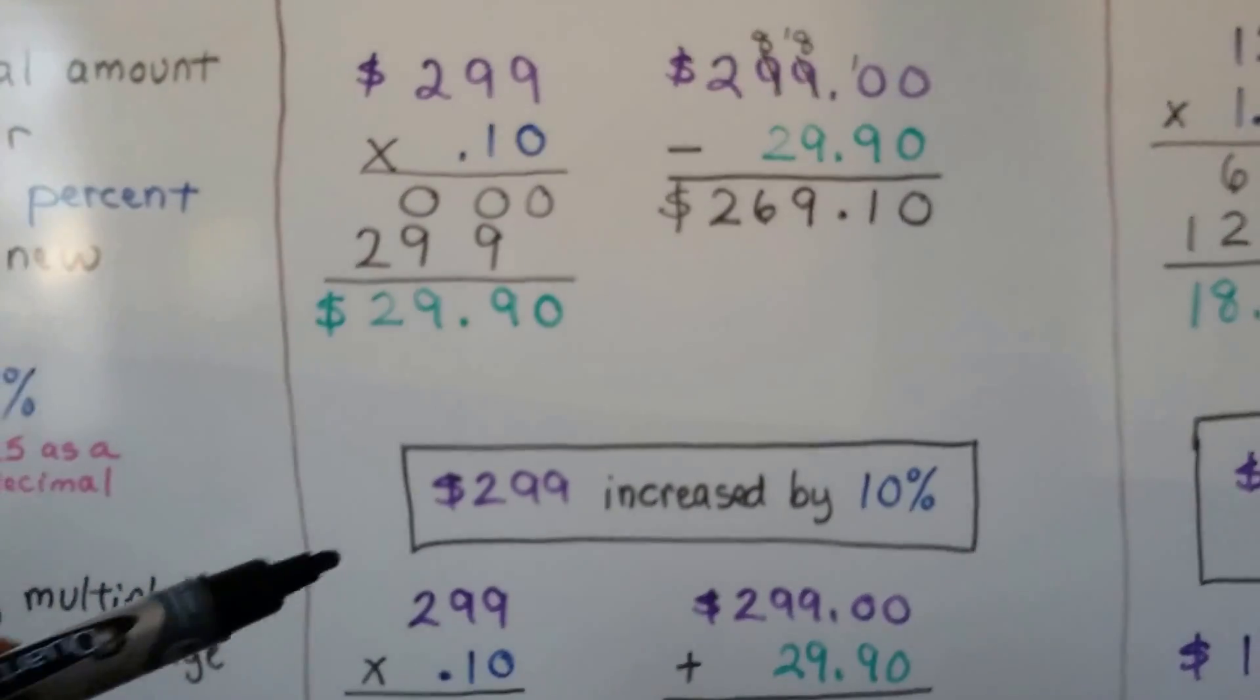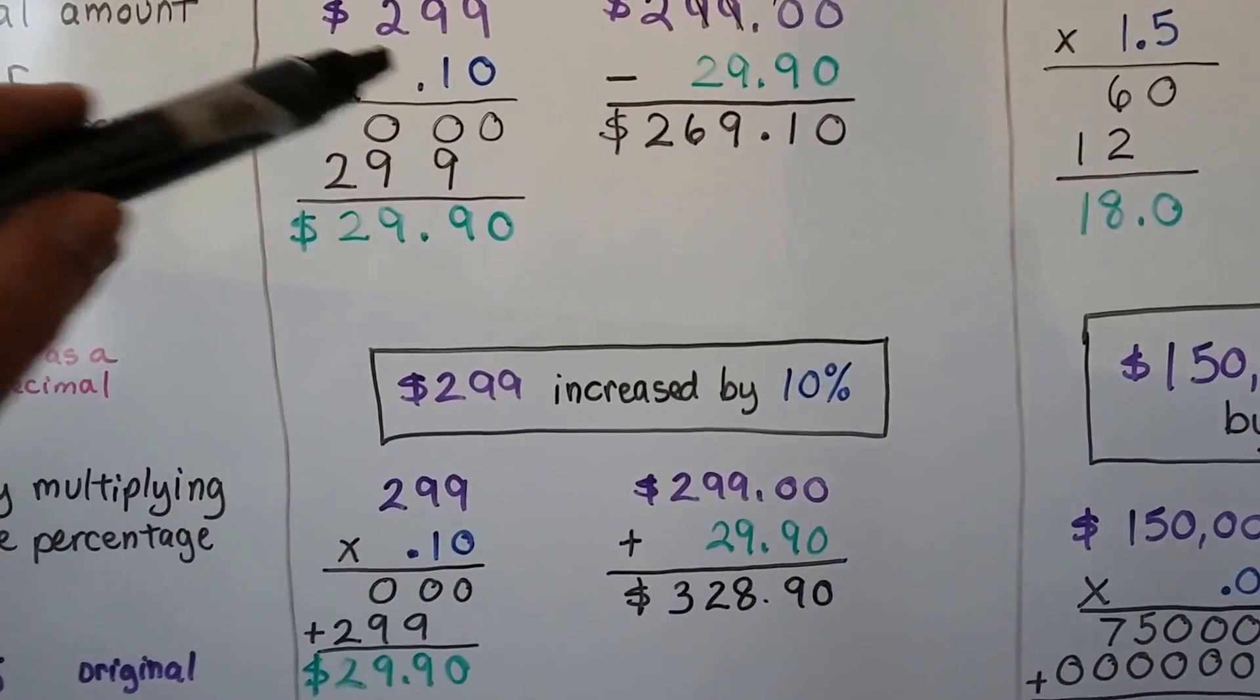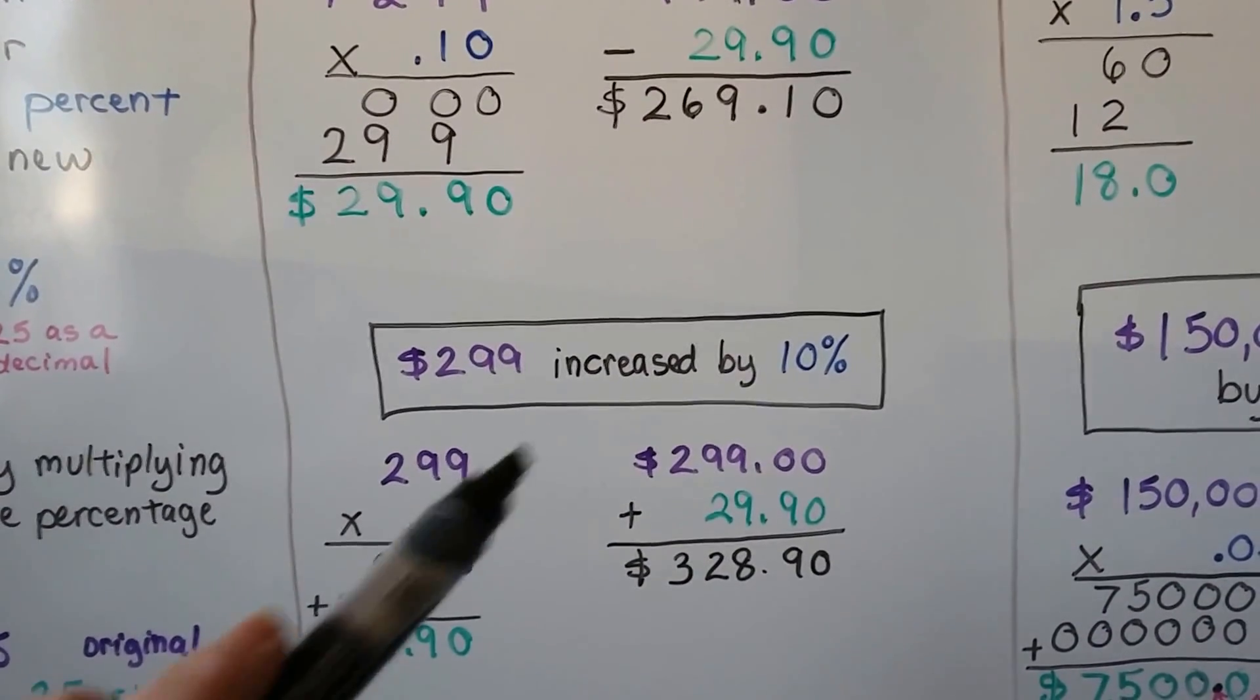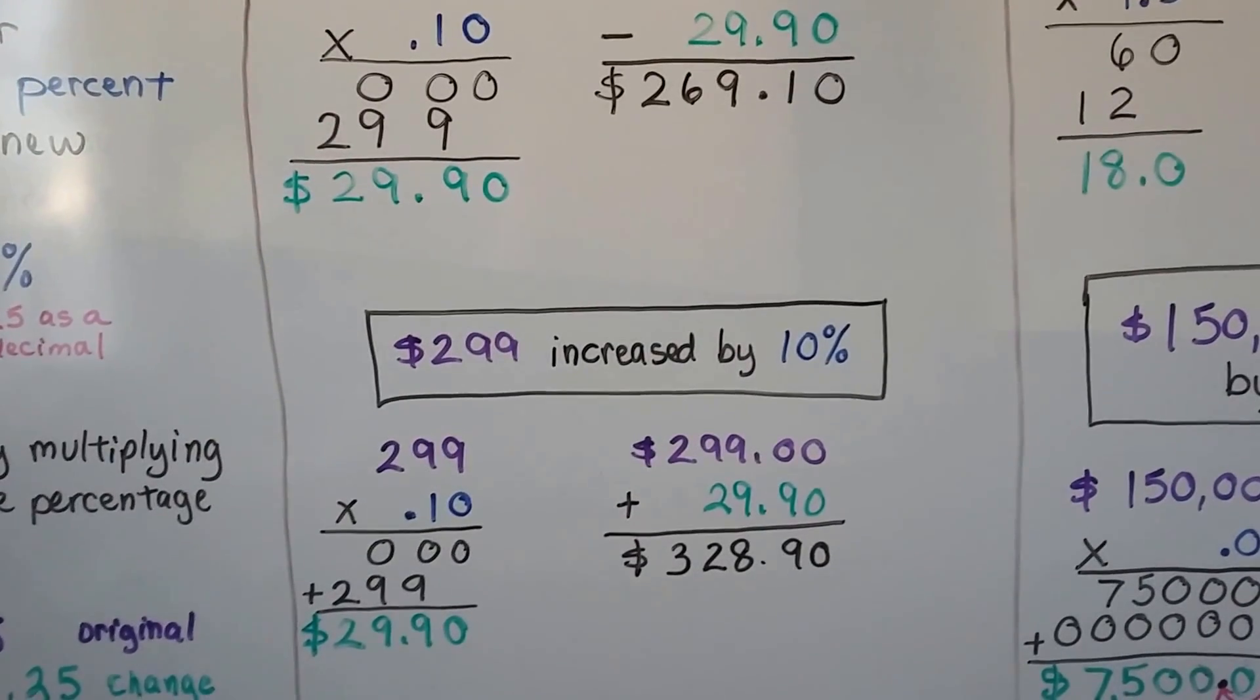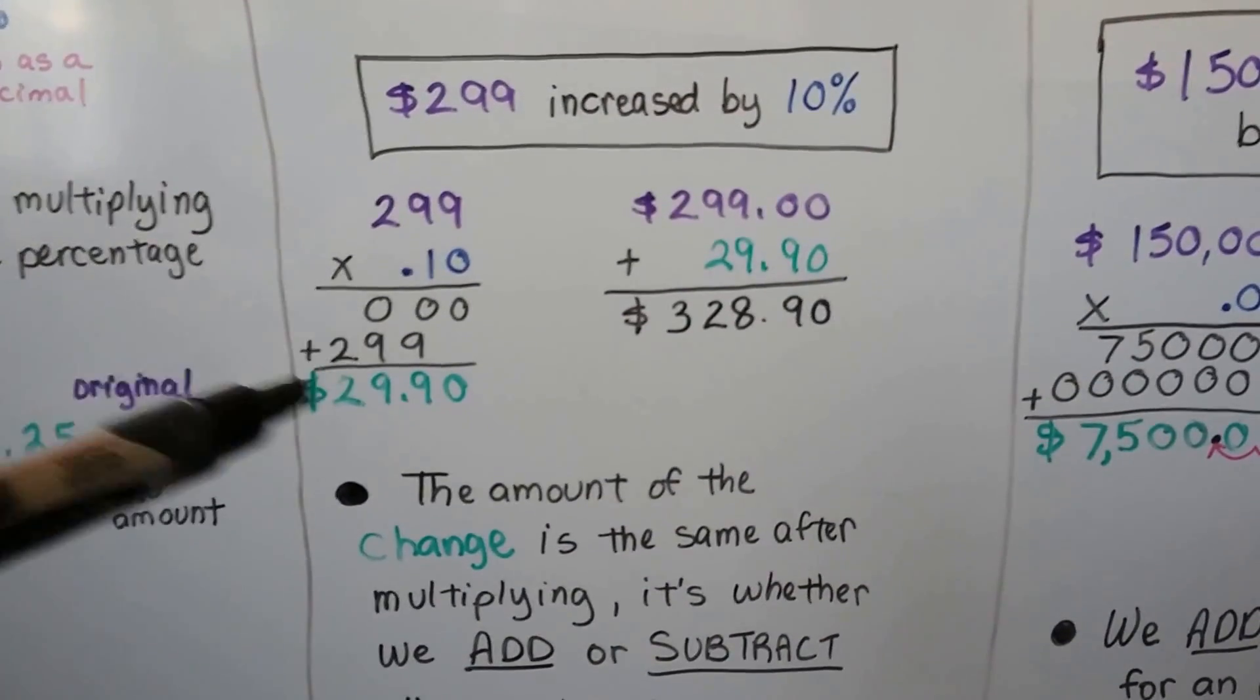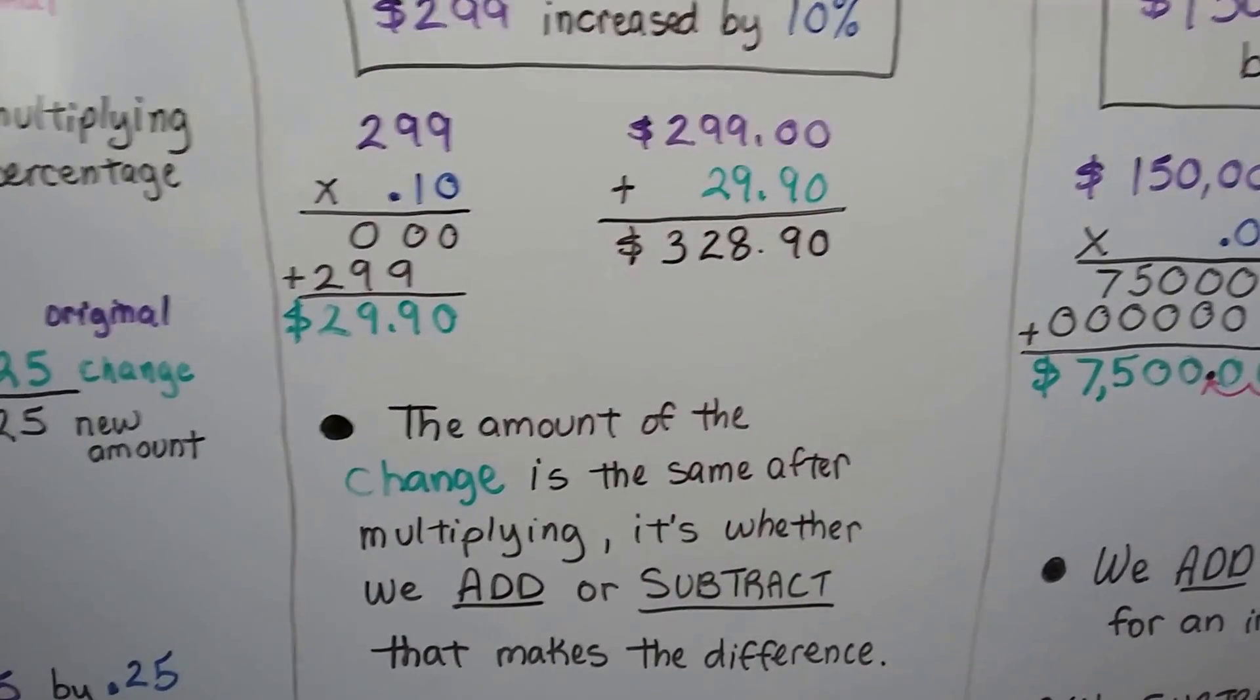Now, if it was $299 increased by 10 percent, we would do the same thing to find the amount of change. But because it's an increase, we would add it to the $299, and that would give us $328.90. The amount of change is the same after we multiply. It's whether we add or subtract that makes the difference, if it's an increase or decrease.